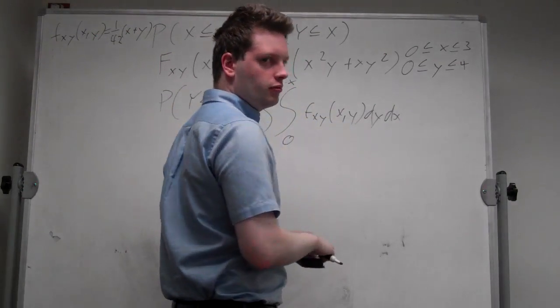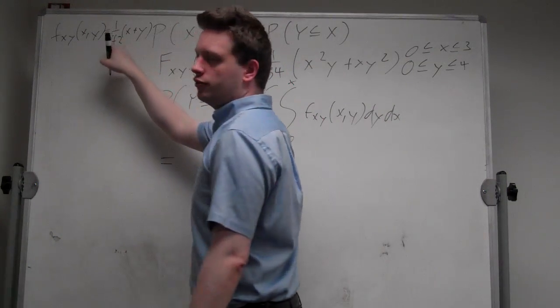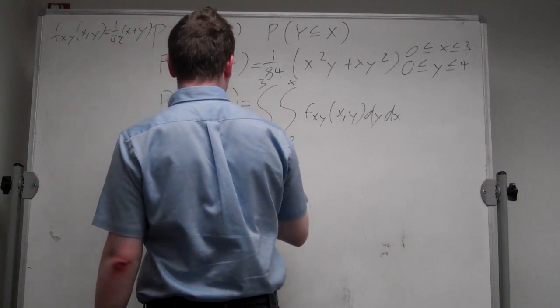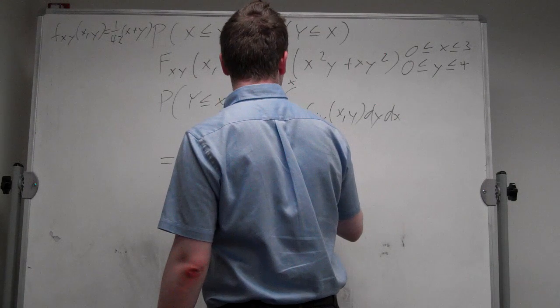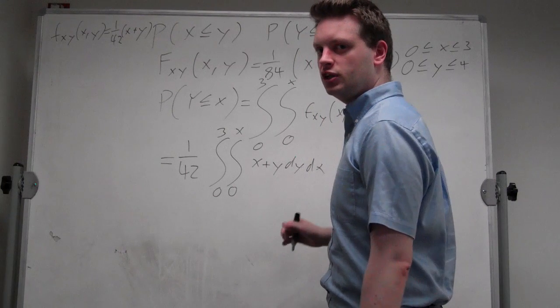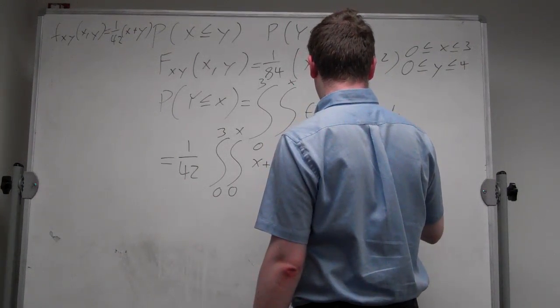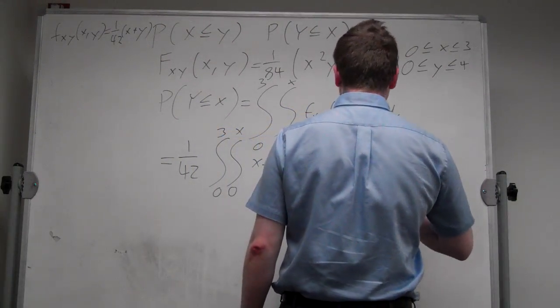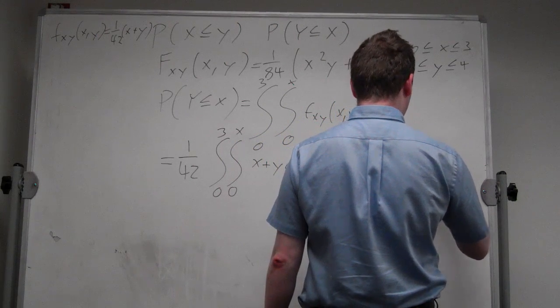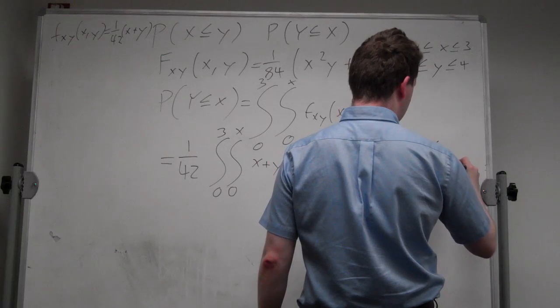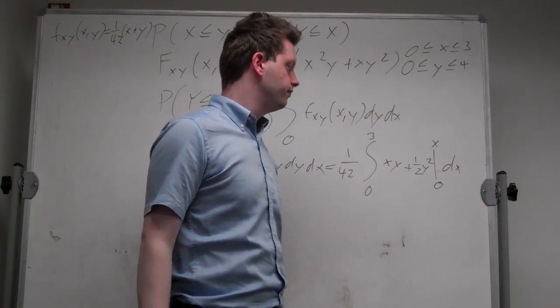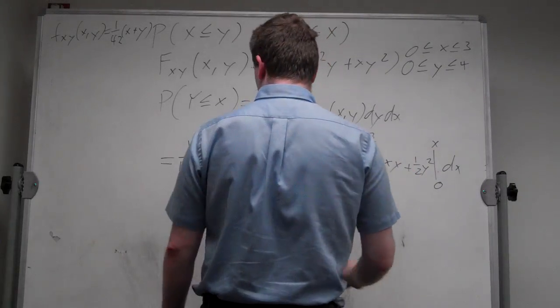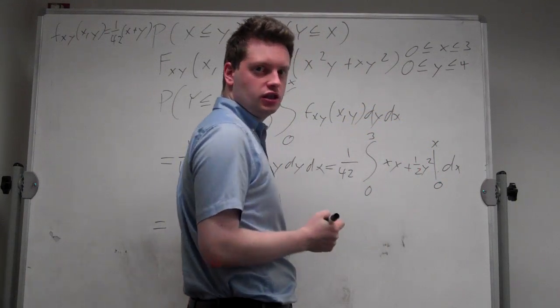Let me plug in the function. So we get 1 over 42, I can take that out, so 1 over 42 times the integral from 0 to 3 times the integral from 0 to x of (x plus y) dy dx. Calculating that gives us 1 over 42 integral from 0 to 3, well x integrated with respect to y is just xy, and y integrated with respect to y is plus 1 over 2 y squared from 0 to x, integrated with respect to x. Plugging in x I just get x squared here and 1 half x squared, so I can rewrite that as being equal to 3 halves x squared.